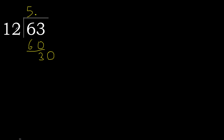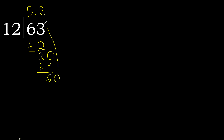12 multiplied by 3 is 36 — 36 is greater. Multiplied by 2: 24 is not greater. Subtract: 30 minus 24 is 6.